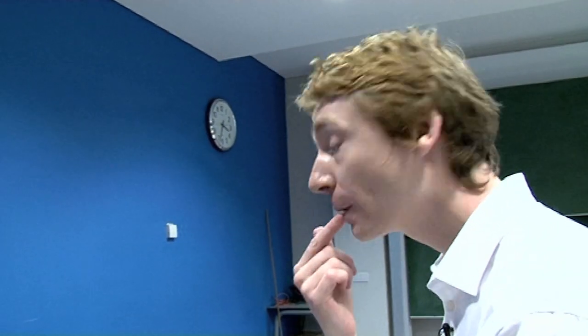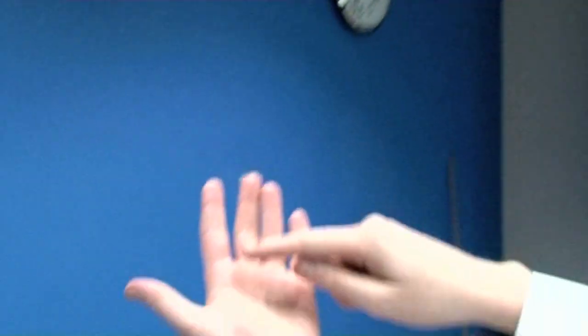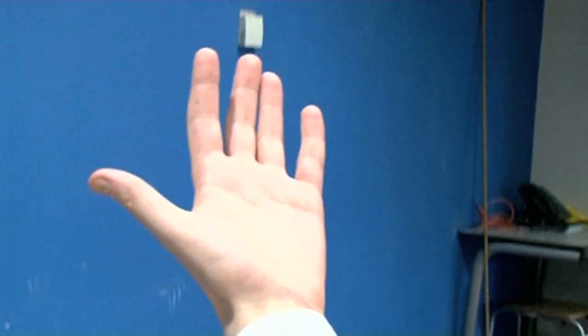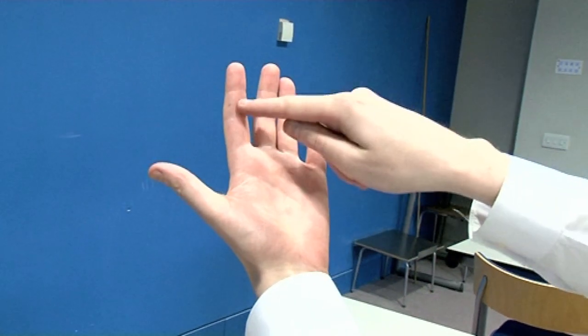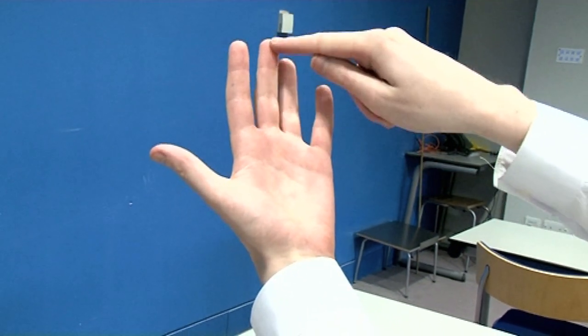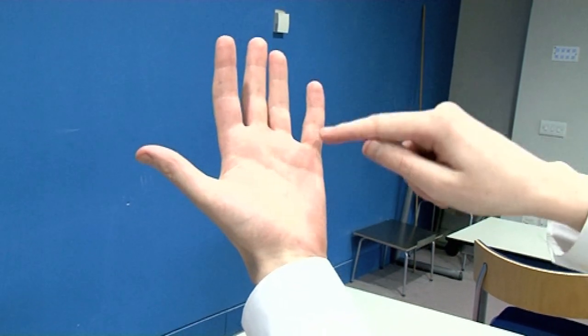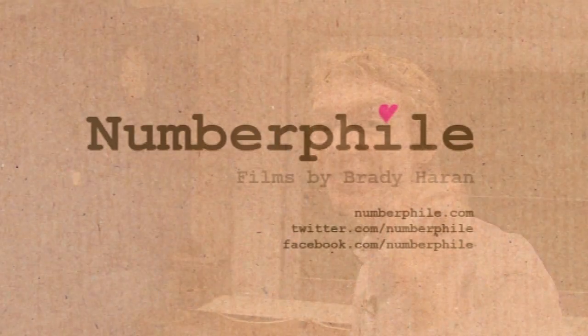Well, to answer that, there are some cultures that still use base 12, and what they do is they count on the segments of your fingers. One, two, three, four, five, six, seven, eight, nine, deck, L, do. Just as easy to use.